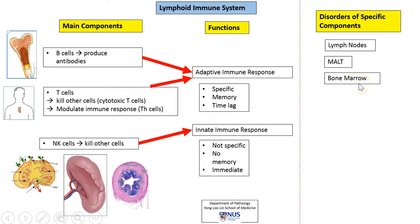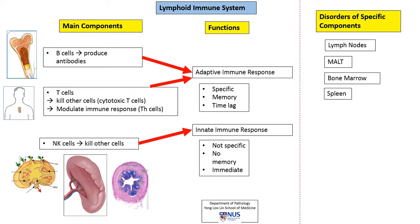There are also disorders in the bone marrow, which can include different types of hypoplasias of the bone marrow components, or malignancies. The chief malignancy in the bone marrow is known as leukemia. In the spleen, there can be a variety of conditions including infections, storage conditions, and the spleen can also be involved by hematolymphoid malignancies including lymphomas as well as leukemias.